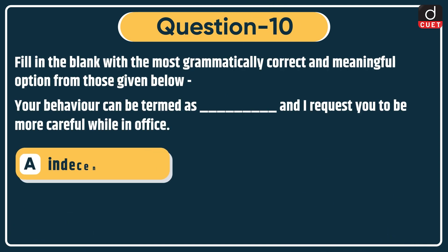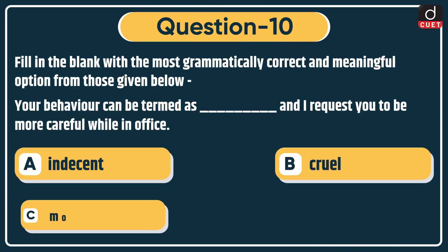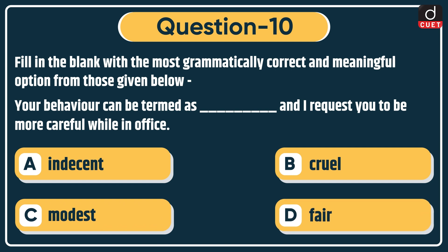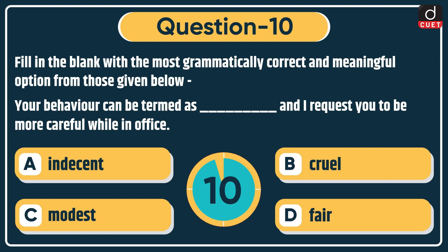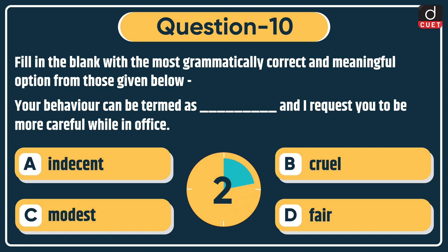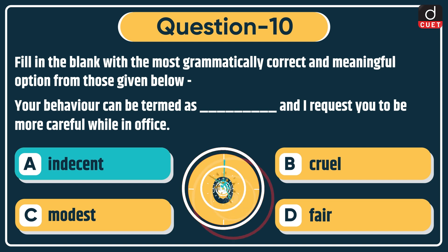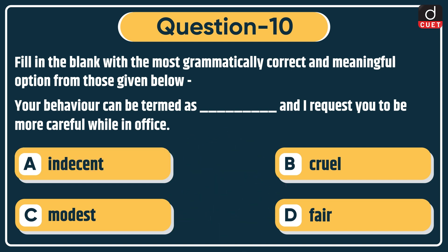Last question: fill in the blank with the most grammatically correct and meaningful option. 'Your behavior can be termed as dash, and I request you to be more careful while in office.' Options: indecent, cruel, modest, or fair. The correct answer is option A: indecent.